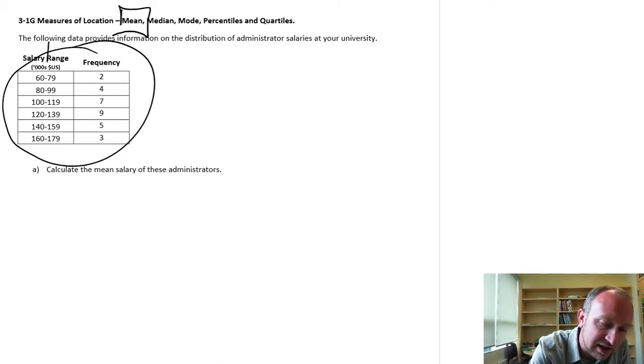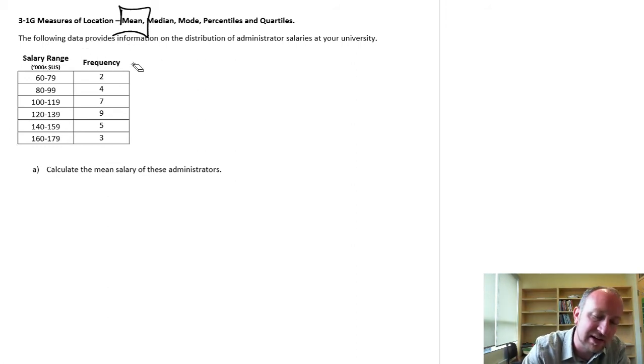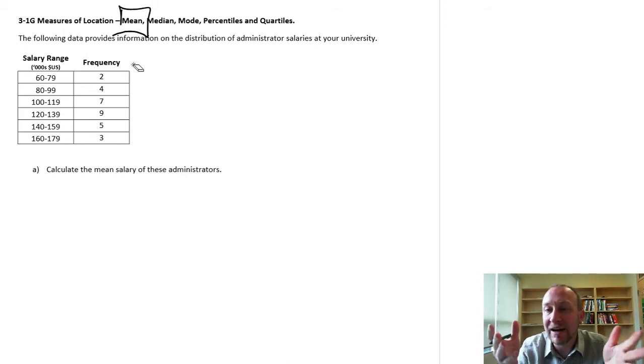So we have salary ranges—this is salaries of university administrators—and we have the frequency of observations in each of those ranges. So how do we use this information to calculate a mean? Well, we're only going to be able to calculate an approximate mean. We don't have enough information to get the precise exact mean, but given this information we can get a pretty good estimate.